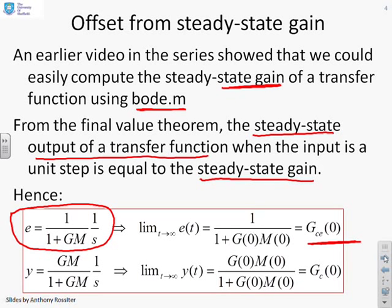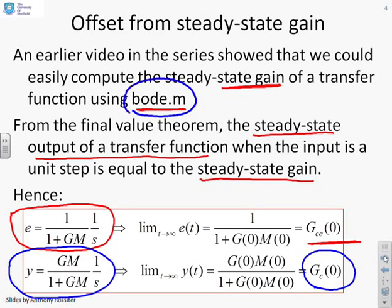Similarly, if we wanted to look at the output, there's the output equation: y equals GM over 1 plus GM times 1 over s. Using the final value theorem, we find that that settles at GC(0). You'll notice because these are transfer functions evaluated at 0, we can use bode.